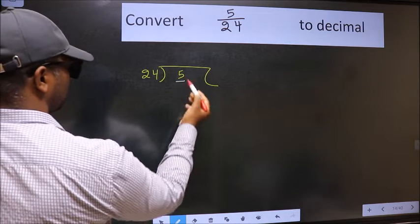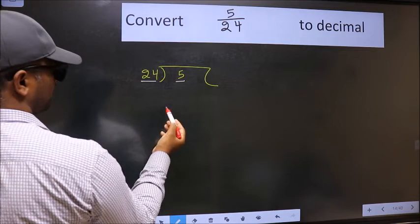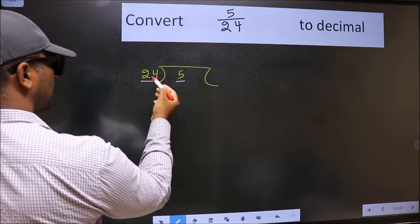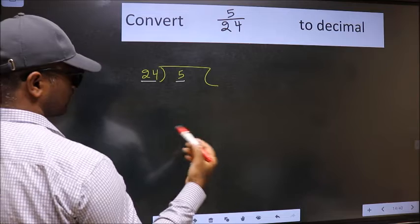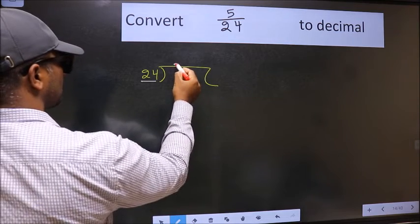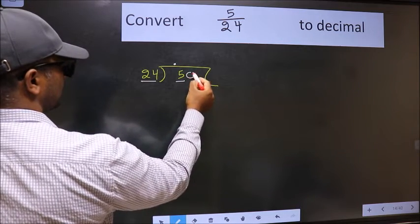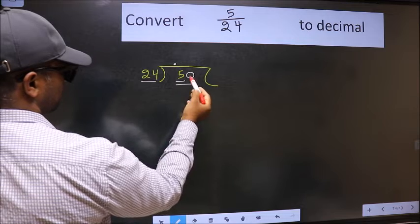Next. Here we have 5 and here 24. 5 is smaller than 24. So what we should do is, we should put dot and take 0. So 50.